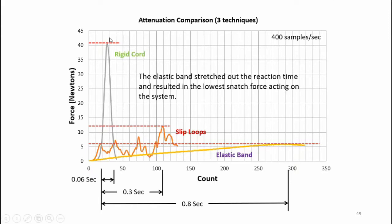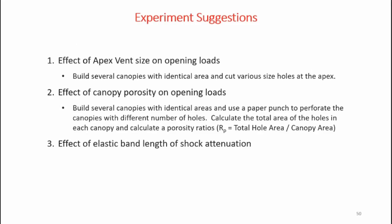In another test with an opening load of a little over 40 newtons, I tested slip loops and a larger elastic band using a rigid cord to set the required drop height. The attenuation was pretty substantial in both cases, so both techniques are effective. Other parachute experiments that could be conducted include: looking at the effect of apex vent size on opening loads, the effect of canopy porosity on opening loads, or the effect of elastic band length on shock attenuation. I hope I've provided some interesting insights on parachute opening dynamics. I encourage you to expand on my experimentation and do your own home research on parachutes and parachute opening. I hope to see you next time at LabRat Scientific.